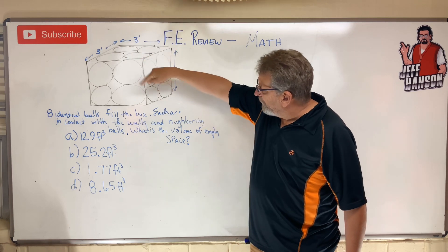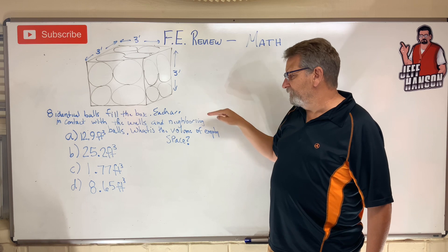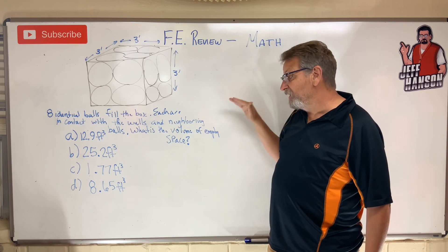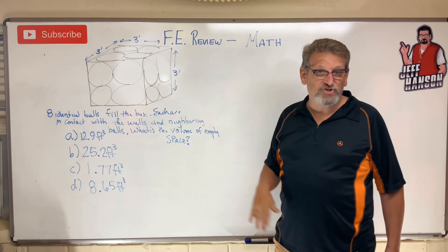Four on the top, one two three four. Four on the bottom, one two three four. If eight identical balls fill the box, each are in contact with the walls and the neighboring balls.